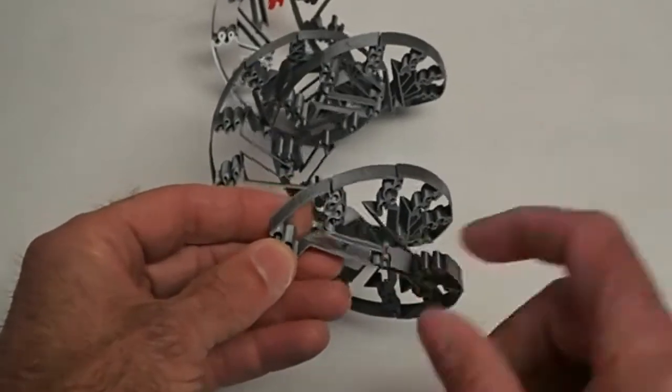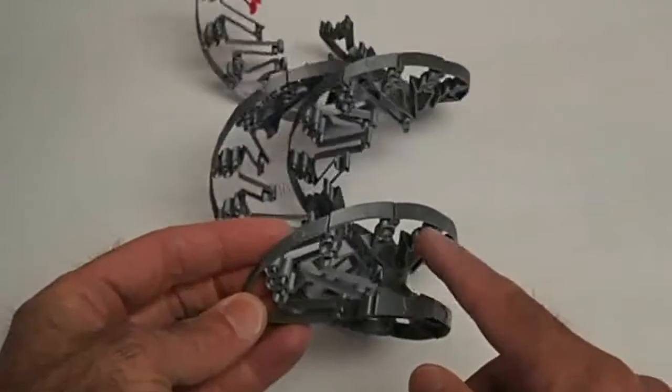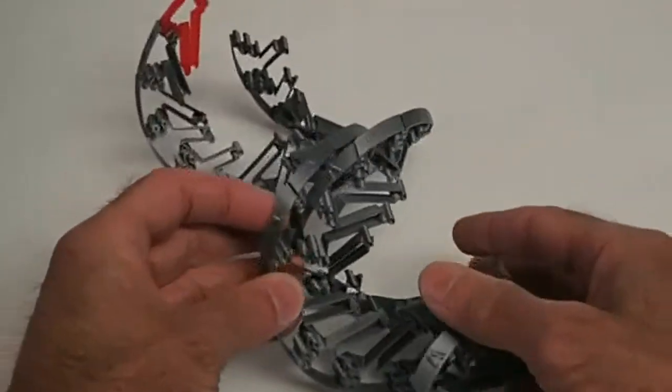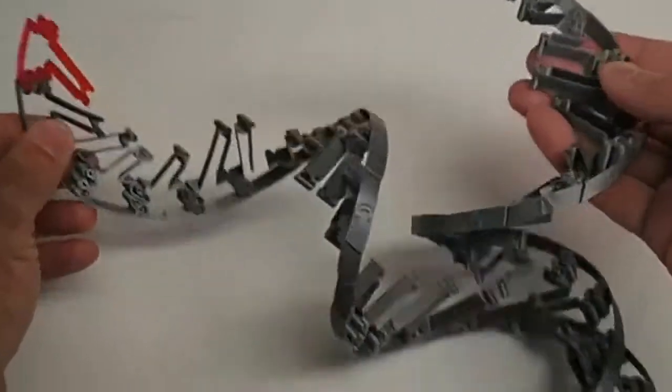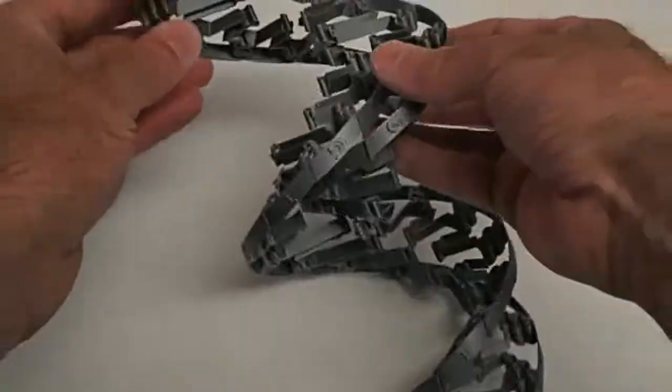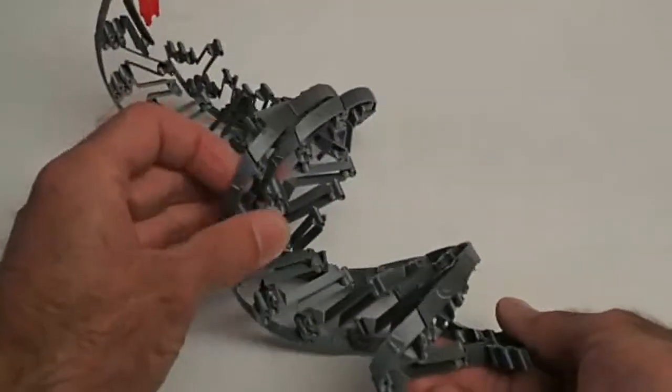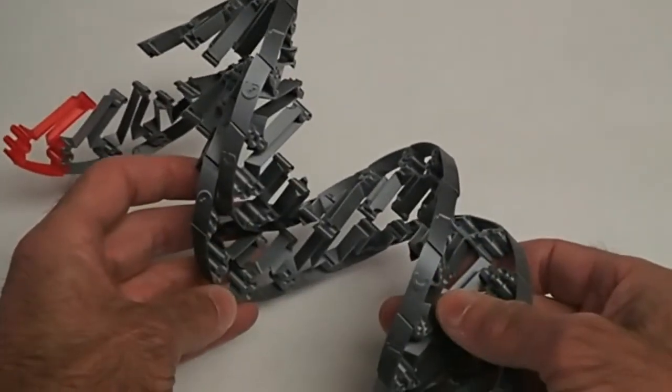Each pair is a separate print and then they get clicked together to form the backbones and click together to form the double helix. You can see it's partly assembled. It's a lot of printing, a lot of little parts and a lot of cleanup. It's actually quite tedious to put together, so I was trying to figure out how to make it simpler.